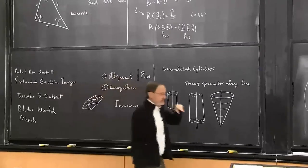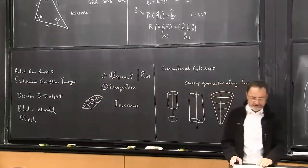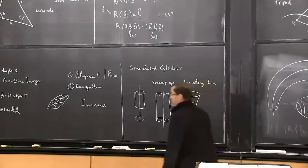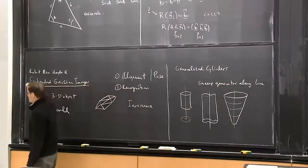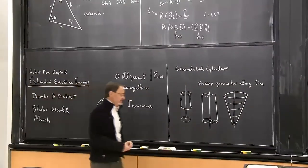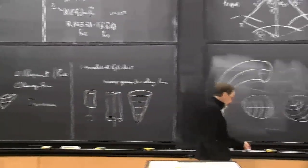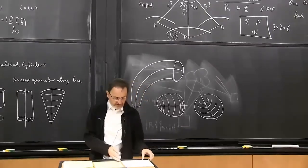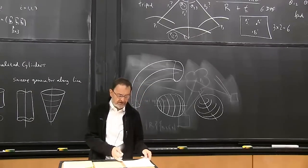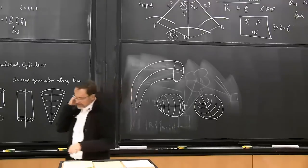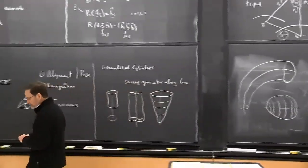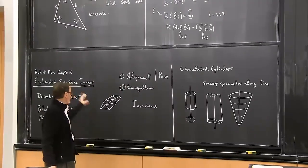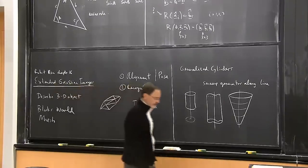There are many attempts at such representations. One is generalized cylinders — a right circular cylinder has a circular cross-section swept along a straight line. We can generalize by changing the generator shape, tilting the generator, varying the size as we sweep (producing cones), or curving the sweep axis. We can even allow the generator shape itself to vary, but then it can do anything and loses uniqueness.